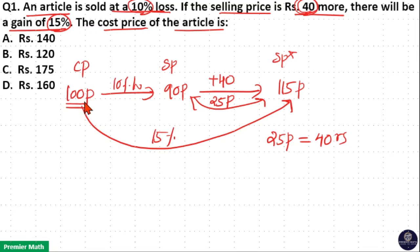So we need to find out what is 100 parts. 100 parts is the cost price. 100 parts is equal to 40 by 25 parts into 100 parts. Which is equal to 25 goes 4 times in 100. So Rs.160.